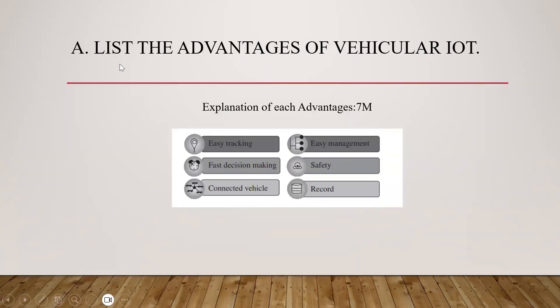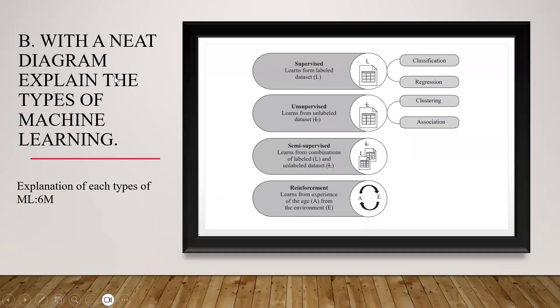For the or-choice first question — list the advantages of vehicular IoT (7 marks) — start by writing what vehicular IoT is and why it is used. Then list the six advantages: easy tracking, fast decision making, connected vehicles, record, safety, and easy management. Once listed, explain each advantage in detail — what is easy tracking, what is faster decision making, what are connected vehicles, and why safety is an advantage of vehicular IoT. All advantage explanations together cover seven marks.